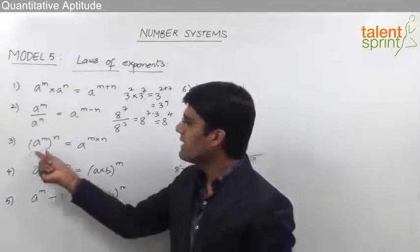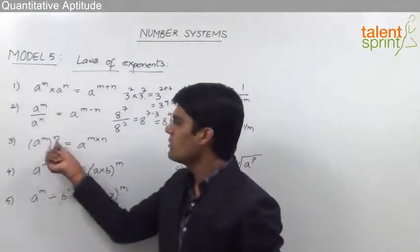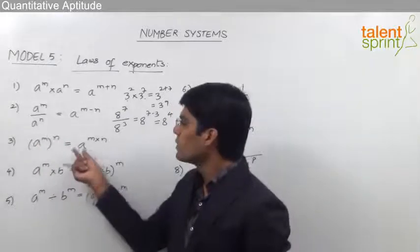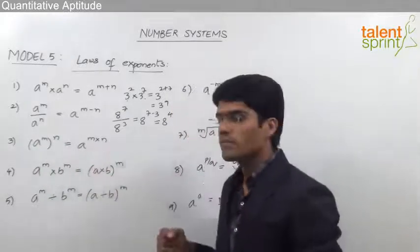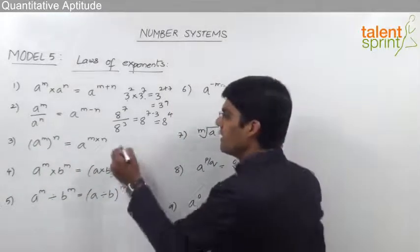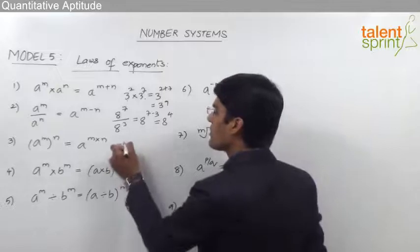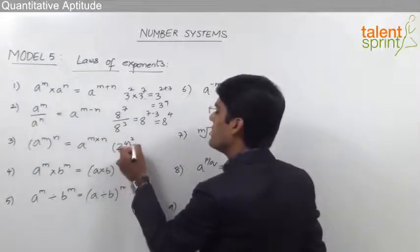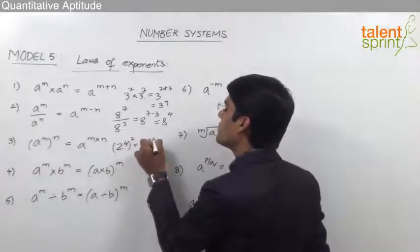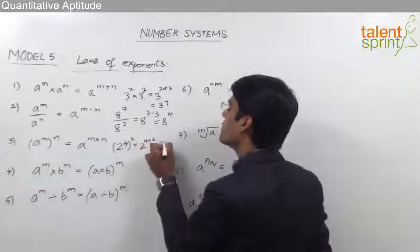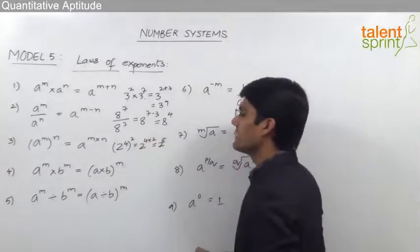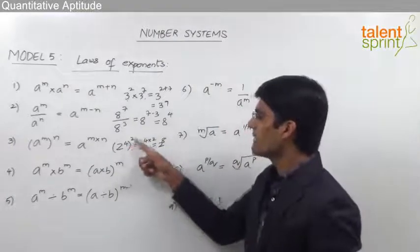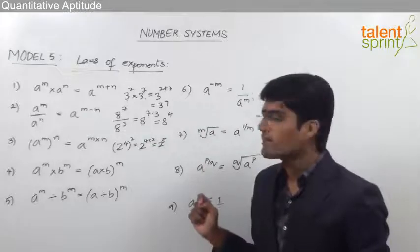The third rule is: a power m, whole to the power of n, will be equal to a power m into n. For example, 2 power 4 whole squared will be equal to 2 power 4 into 2, which is equal to 2 to the power of 8. So the powers here can be multiplied: 4 into 2 is equal to 8.